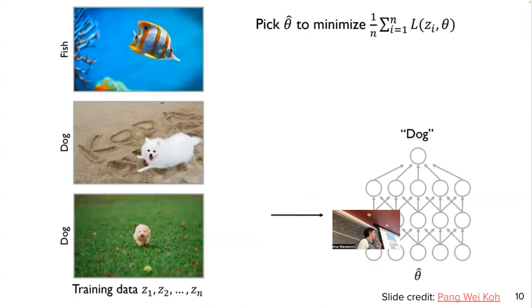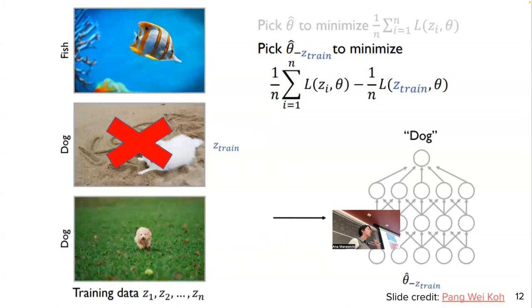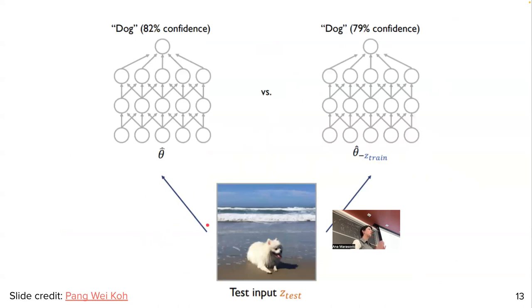We would remove the identified important training image and retrain our neural network. Now for the same test picture, we have two networks: one trained on full data, predicting 82% confidence that this is a dog, and another trained on all data except one training point, making a prediction that it's still a dog but with much smaller confidence. We can then say this example was important because the model's confidence was affected by removing that data point.